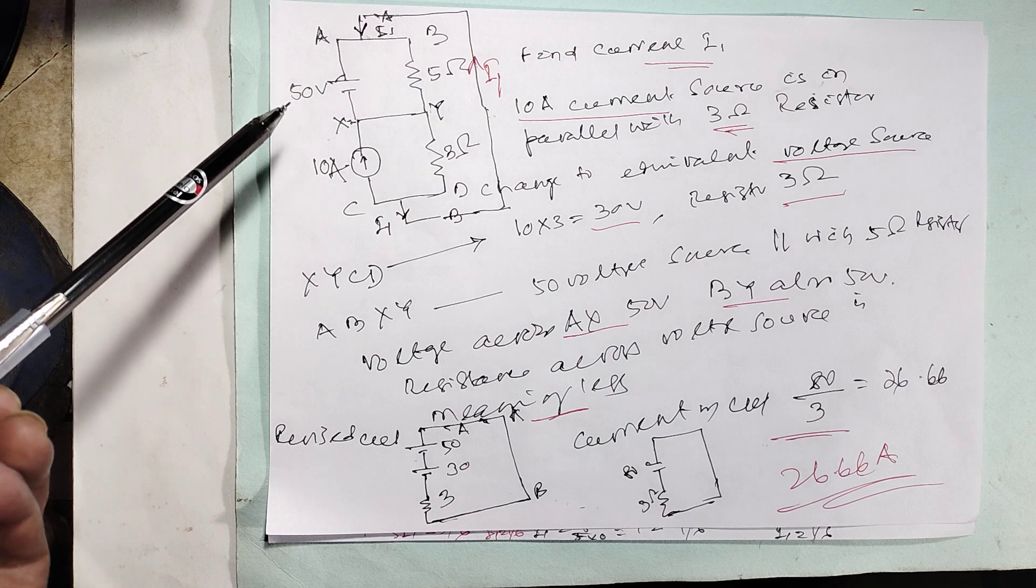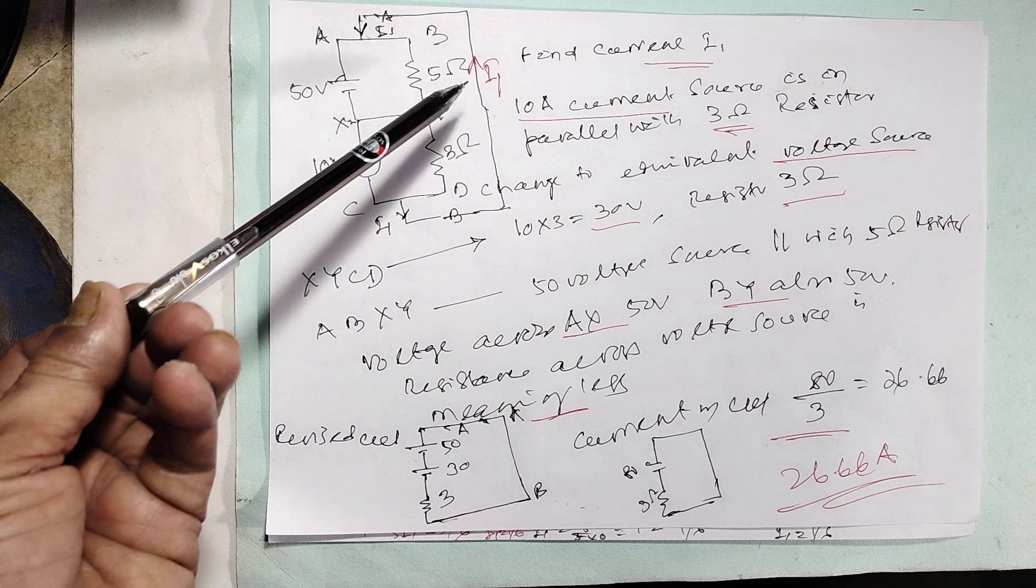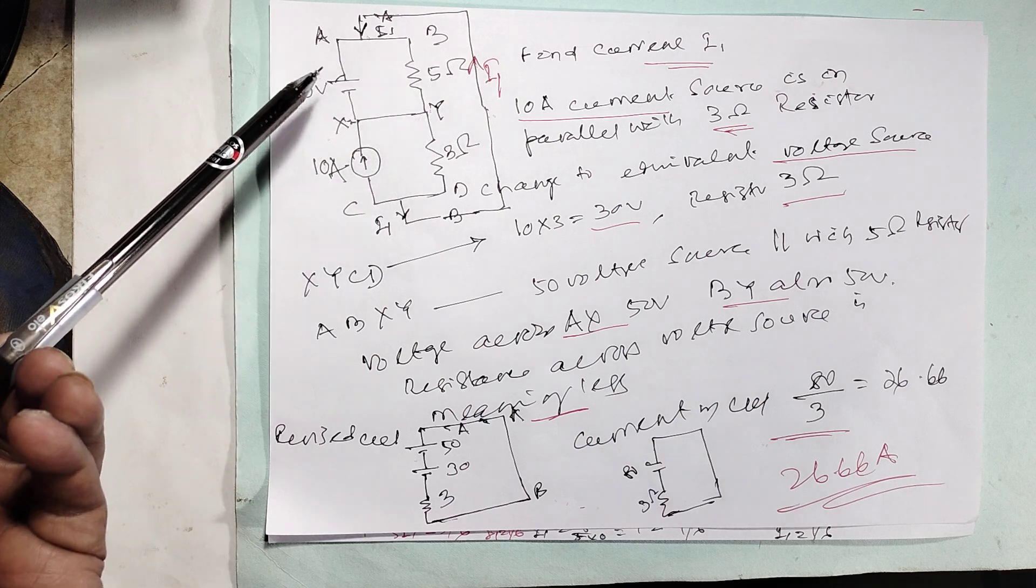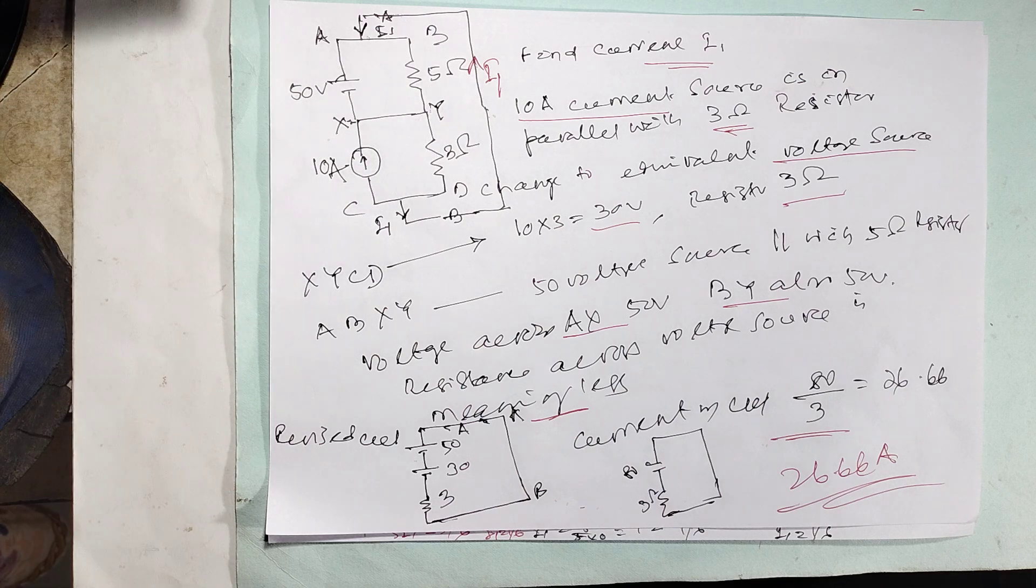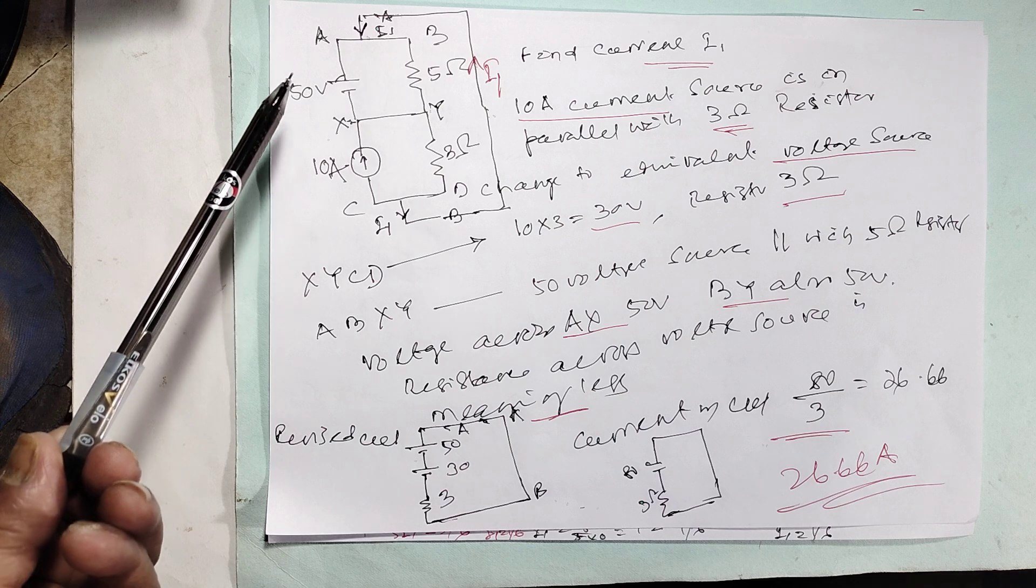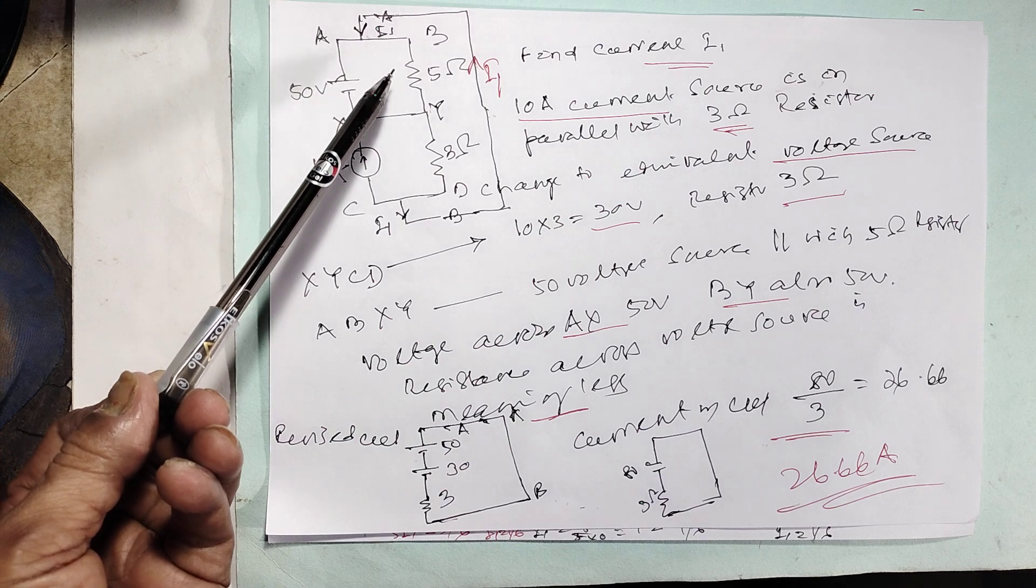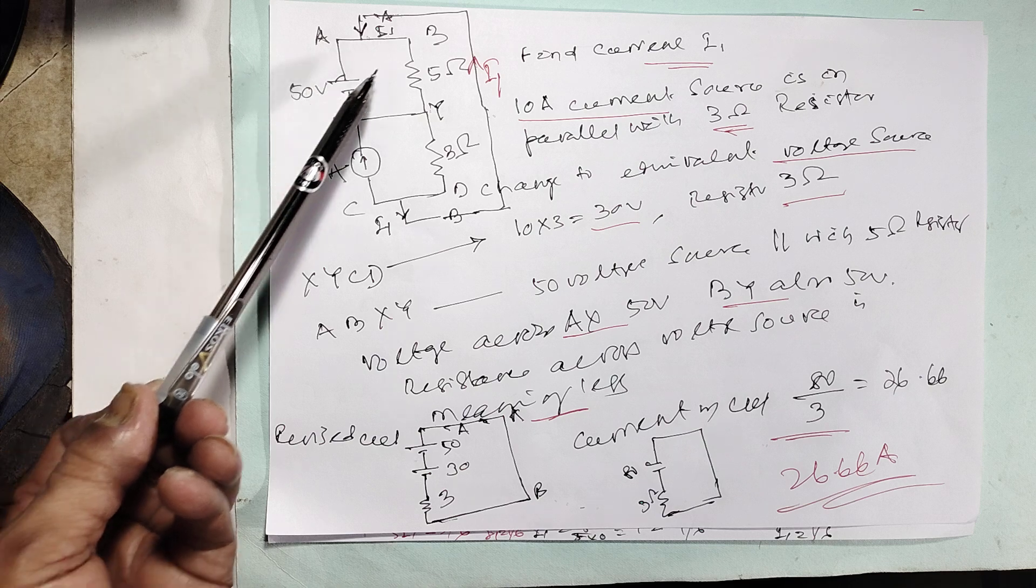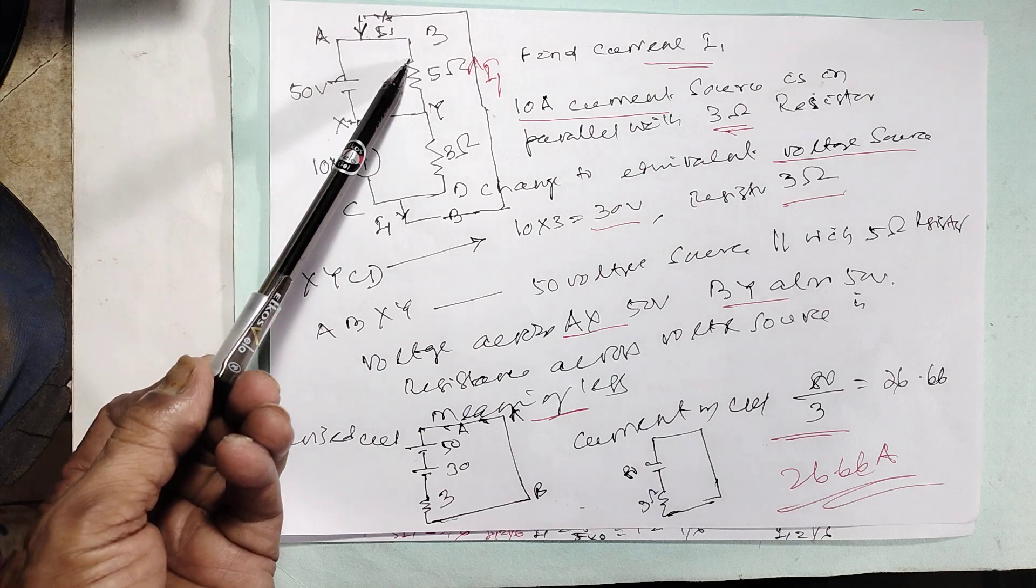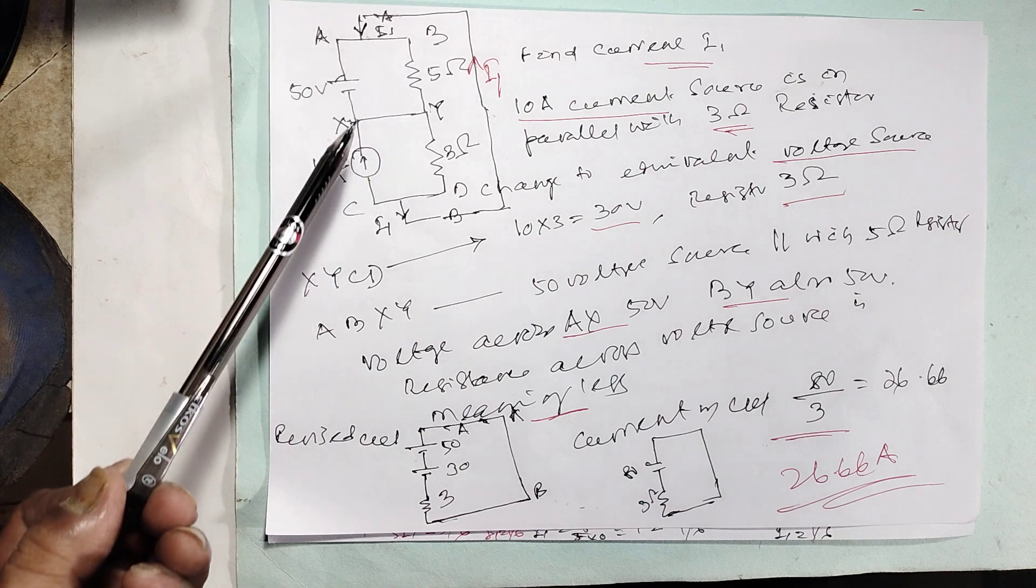This is a circuit where you have to calculate the current. This circuit is very easy, but the concept is clear. 50 volts - one 5 ohm resistor in parallel. This is meaningless because this 50 volts means this is automatically 50, because these are parallel. So DC 50 volts.